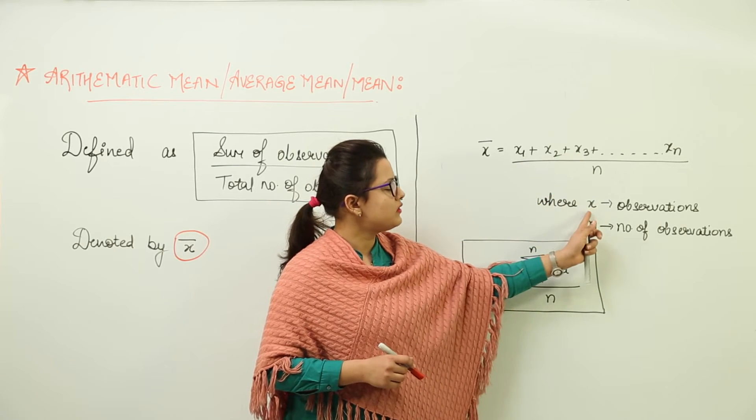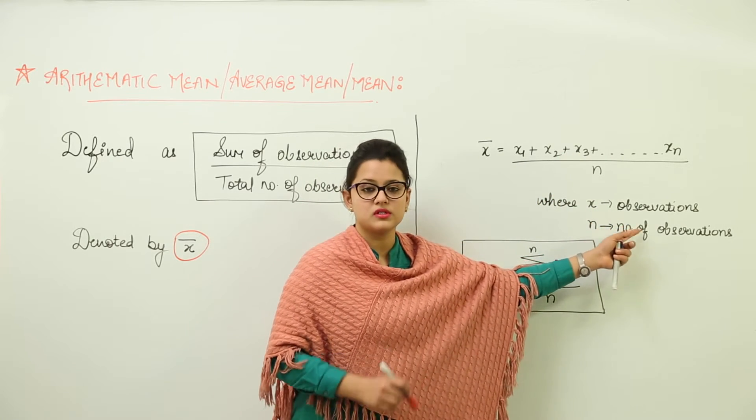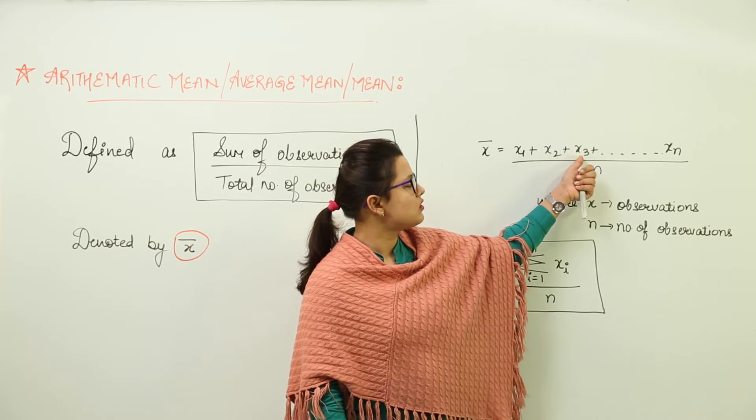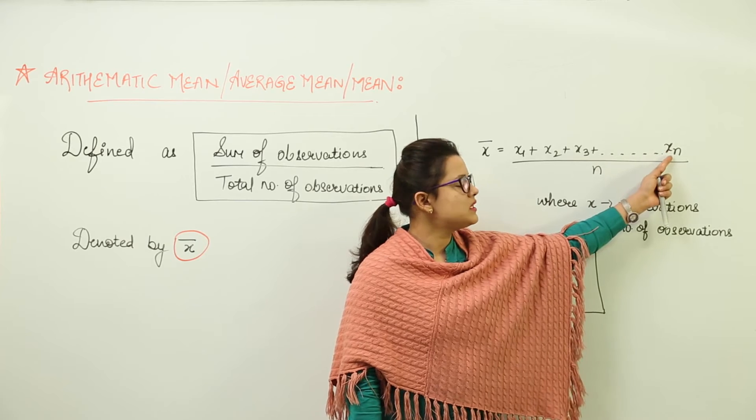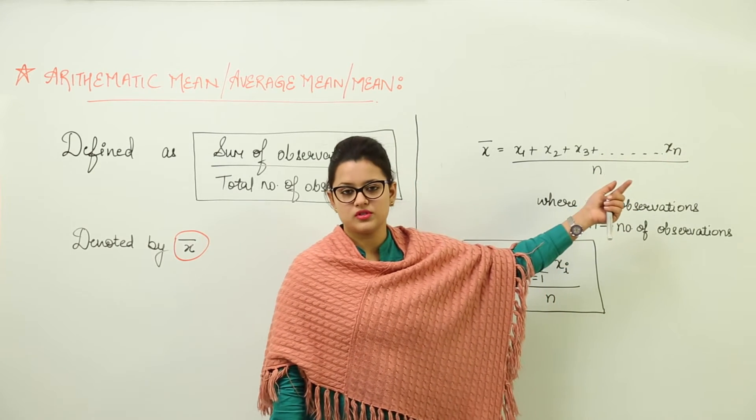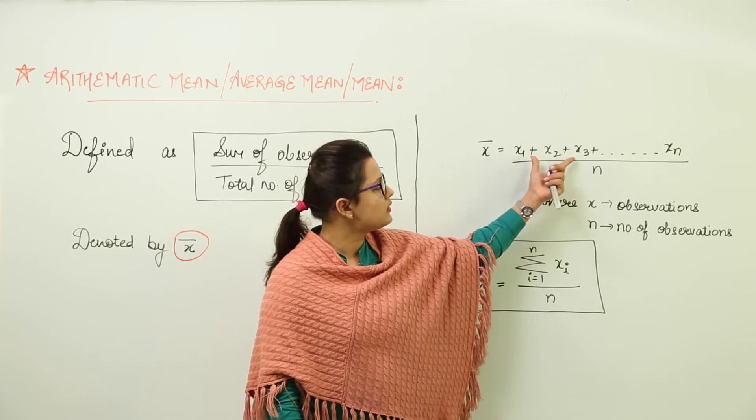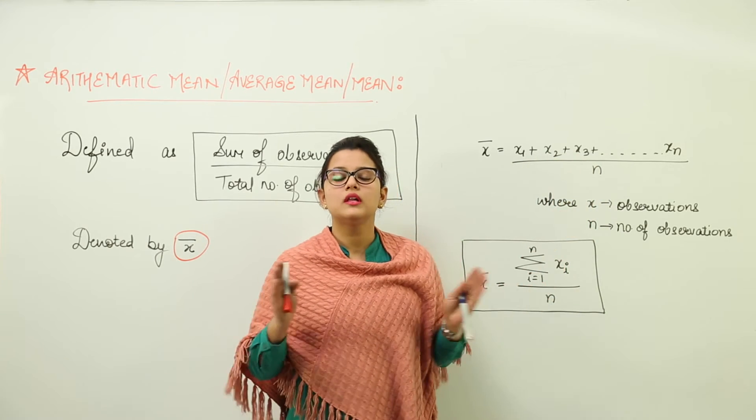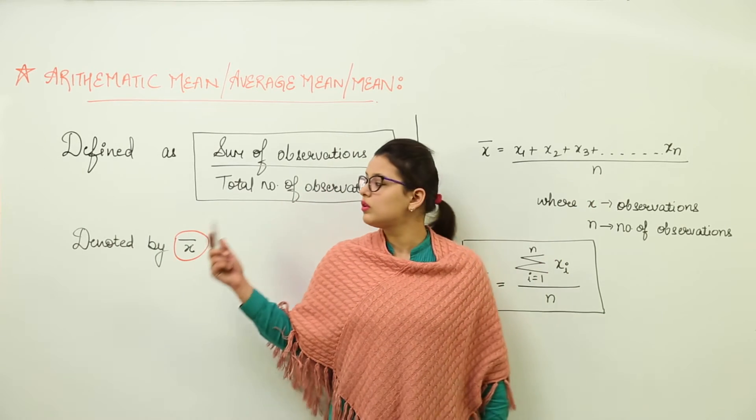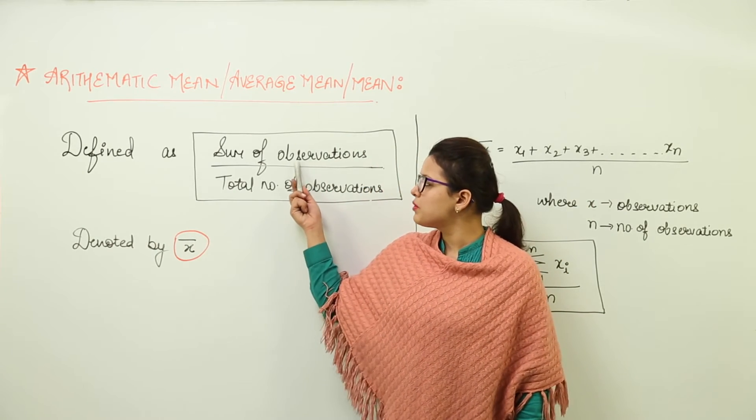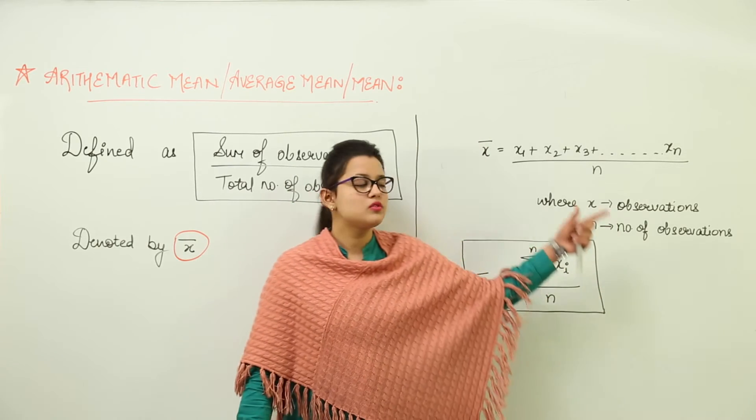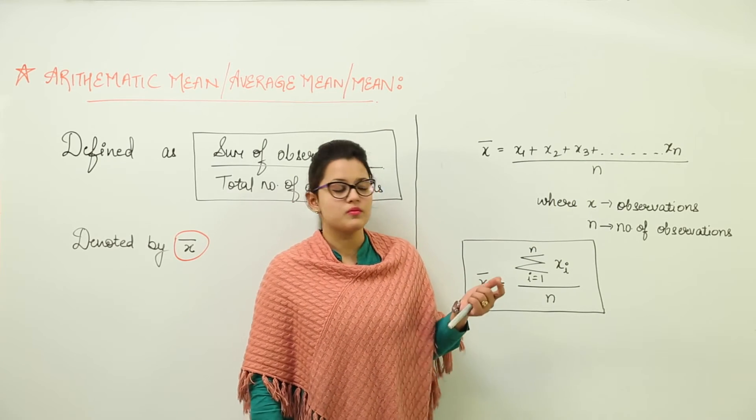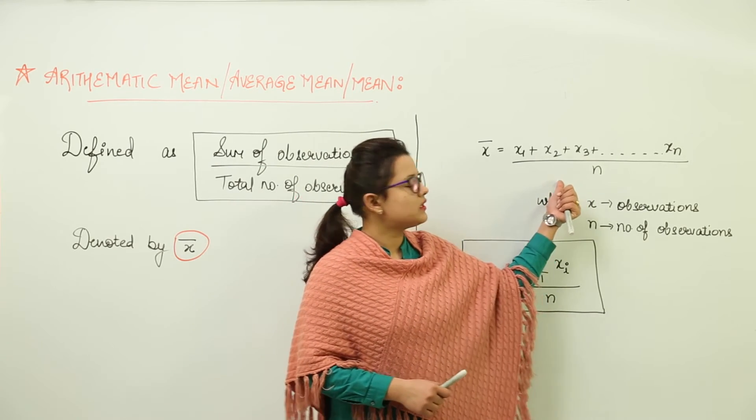We have X1, X2, X3. I have written down X as observations. X1 represents your first observation plus your second observation, third observation up to N. XN means the last observation. You add up all the observations and divide them with N, that is the total number of observations. That is what I have taught you in this, right? The sum of observations upon total number of observations. So we have added all the observations and divided it with the total number of observations. With this we can get our mean.